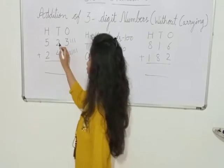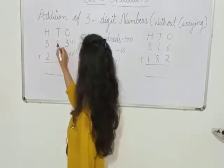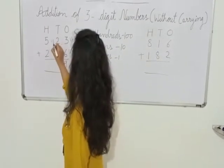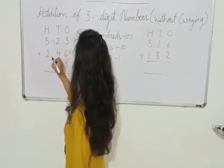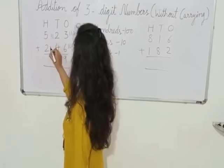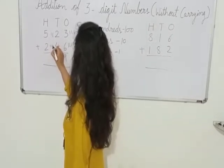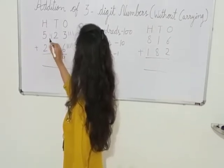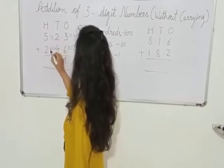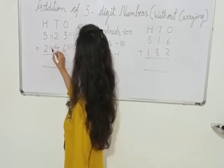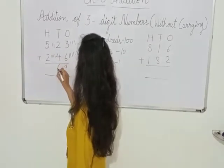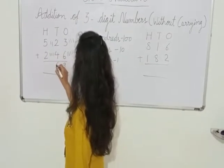Now here we have 2, so we will draw 2 lines: 1, 2. Here we have 4, so we will draw 4 lines: 1, 2, 3, 4. Let's count it: 1, 2, 3, 4, 5, 6. So we will write down 6 here.